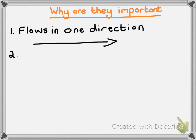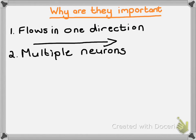The second reason why a synapse is so important is that you can use multiple neurons at the same time. In other words, you are able to send a singular message to several — or more — neurons at once, meaning we are going to go from one neuron and be able to pass that message on to seven or more neurons.